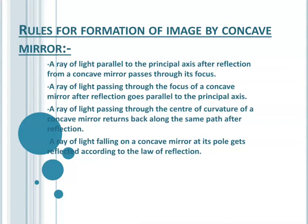Rule 3: when a ray of light passes through the center of curvature of a concave mirror, after reflection it gets reflected back in the same path. Rule 4: a ray of light falling on a concave mirror at its pole gets reflected according to the laws of reflection — that is, the angle of incidence is equal to the angle of reflection.